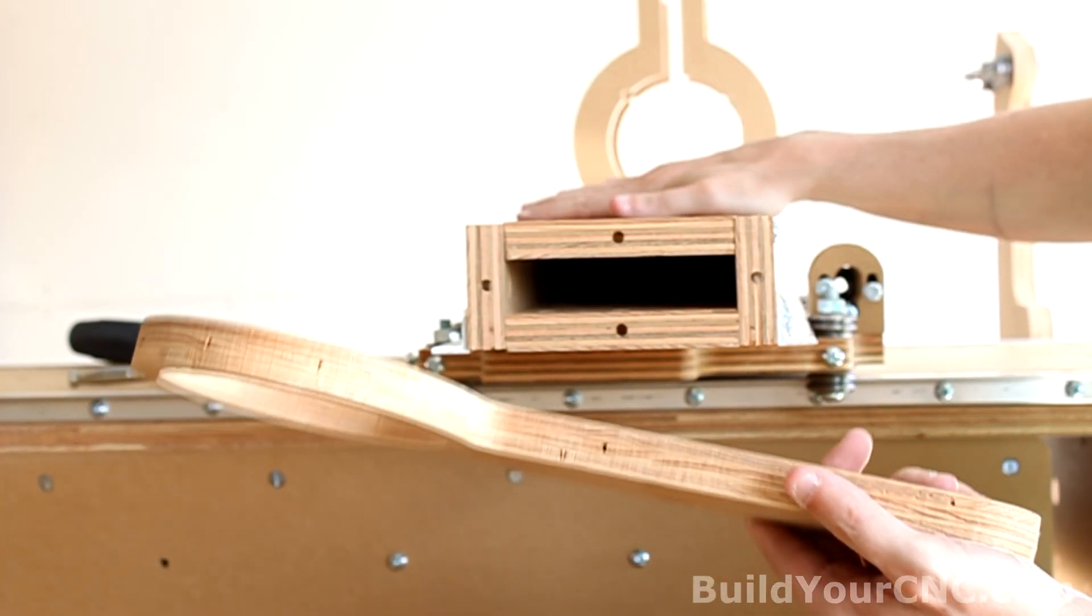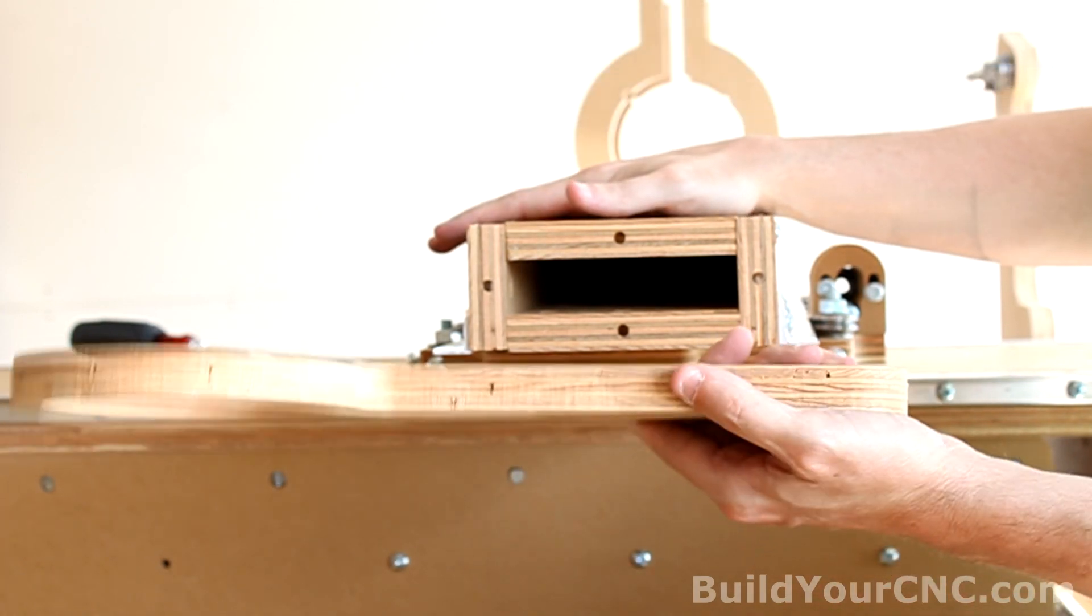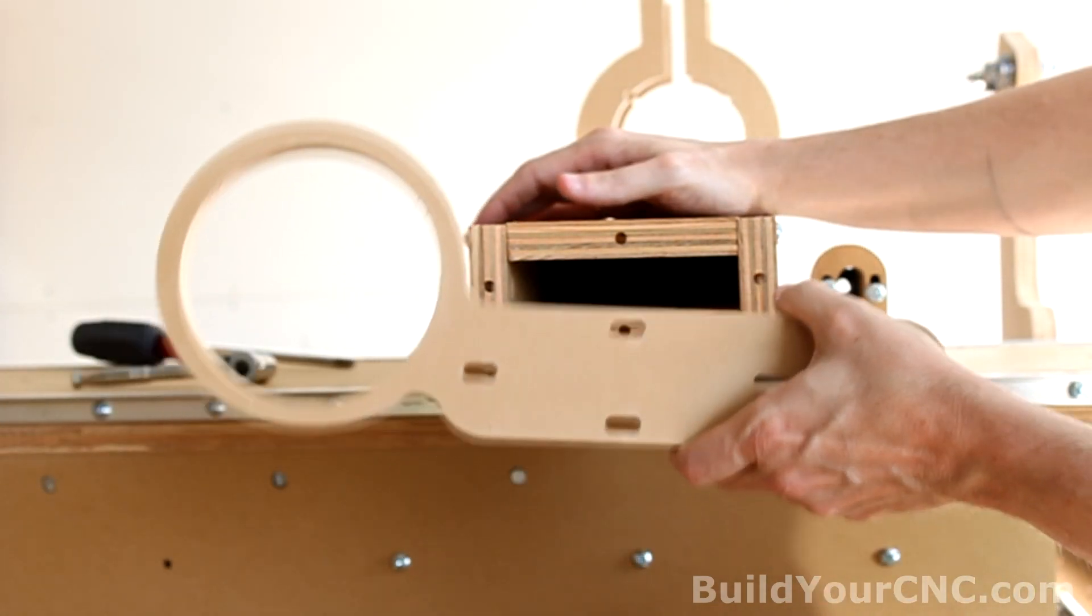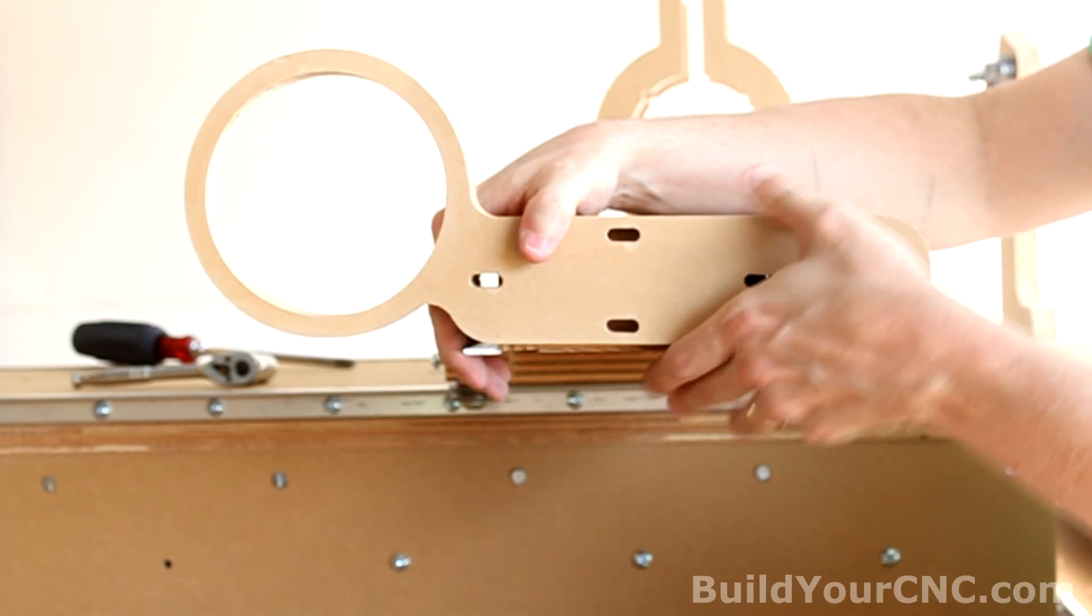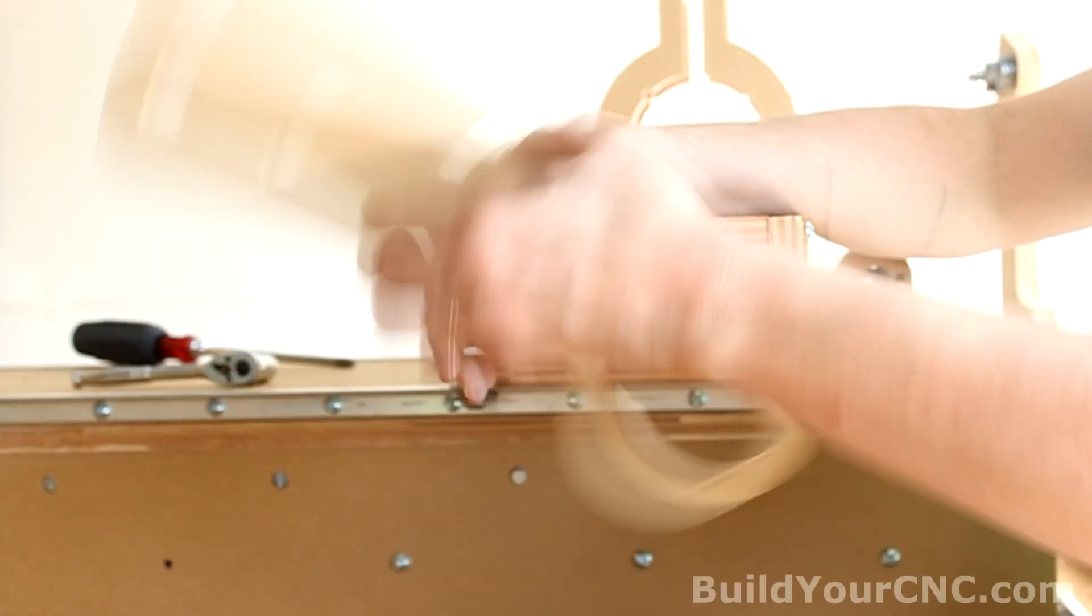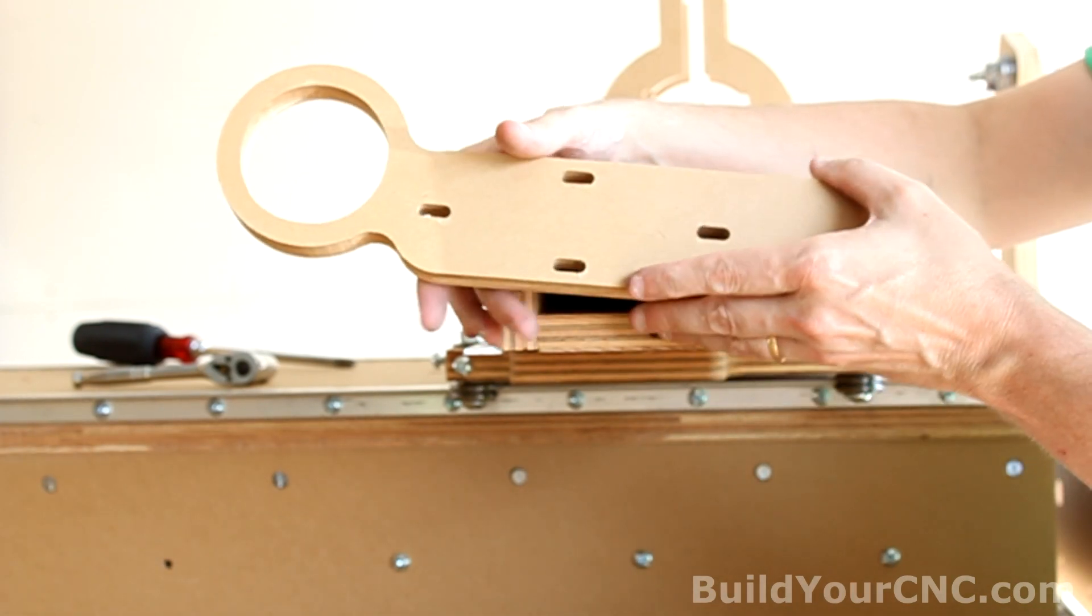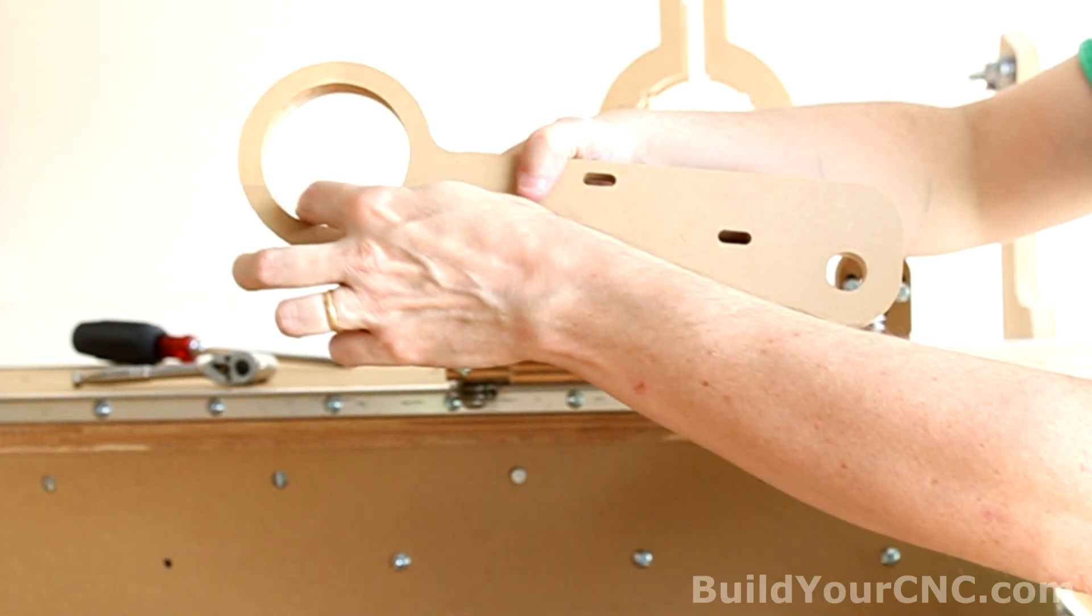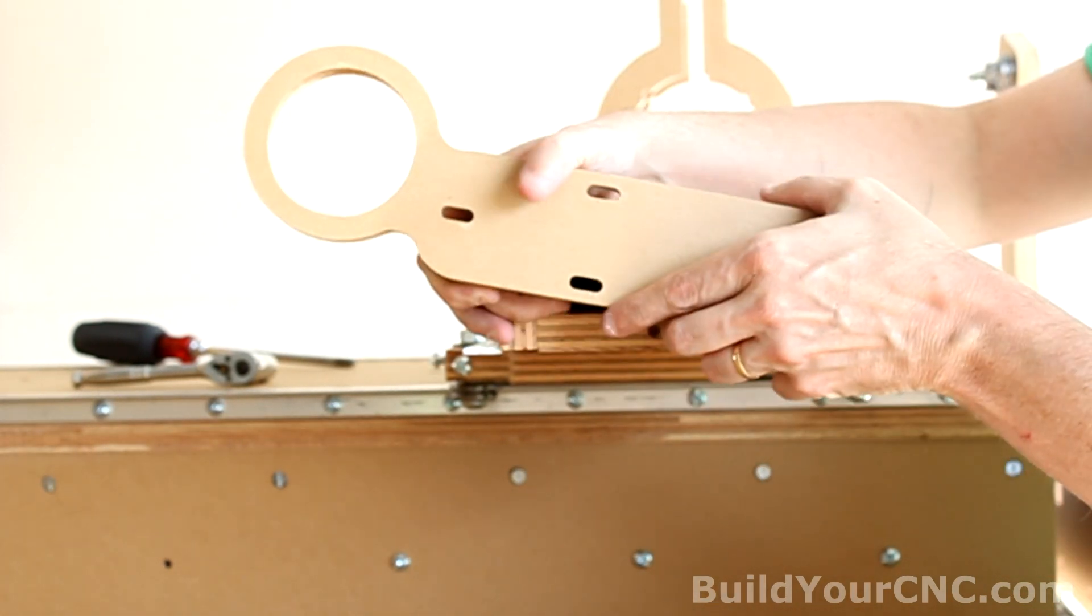We're going to put on the top hose and upper bearing mount for the Z-axis. If you're using a 4-inch hose, go ahead and use this one. If not, if you're using a 2-inch hose, use this piece. This is actually a little bit larger than 2-inch, so the hose will be able to fit through it.